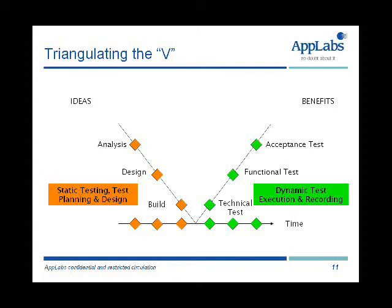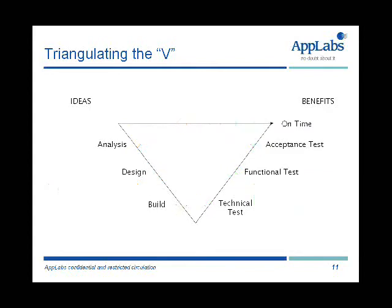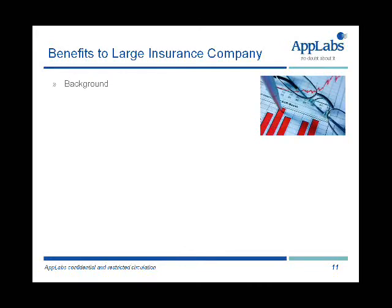Getting into business testing: business testing is there to validate that the requirements have been met and also to give us confidence that we're going to realise those benefits. By triangulating the V, we are more likely to deliver on time, to cost, to the required quality with the defined scope. In other words, business change and business transformation ideas will be more likely to result in benefits because of the business testing activity we've undertaken.